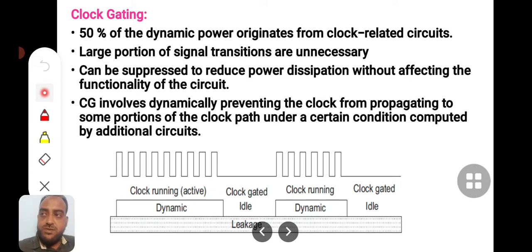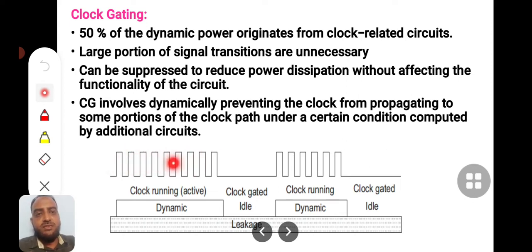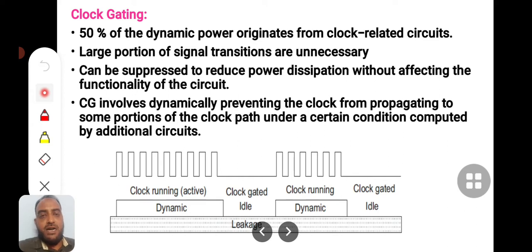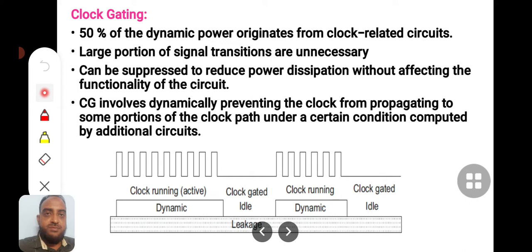Let us first understand why clock gating is needed. Clock gating is used to reduce power consumption. The clock signal continuously toggles on and off, producing the highest number of transitions in a circuit. In fact, 50% of dynamic power originates from clock-related circuits. Across all chips involving dynamic power dissipation, 50% of the power is due to the clock.